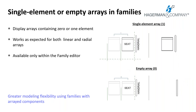This one is great and something I had struggled with for years: you can now flex both linear and radial arrays to values of one or zero in the family editor. This feature works as expected for both linear and radial arrays and is only available within the family editor environment. Historically, I used to need two families — one for a single instance and one for multiple — but now it can all be in one family. With an empty array, we can now have the array as an option without an unignorable error.